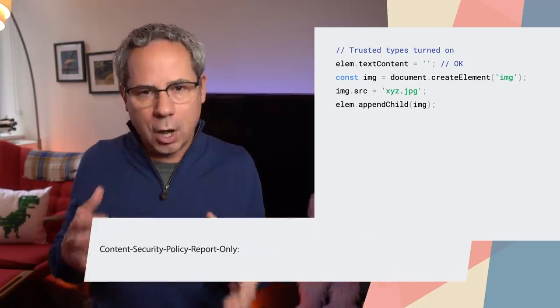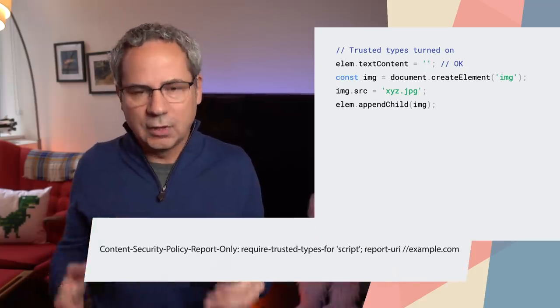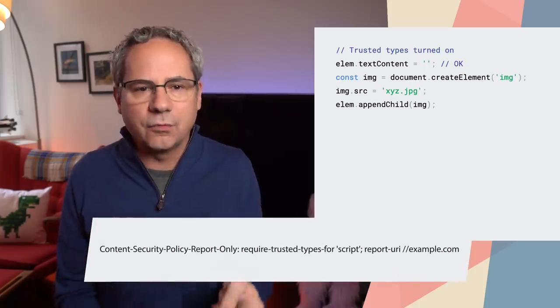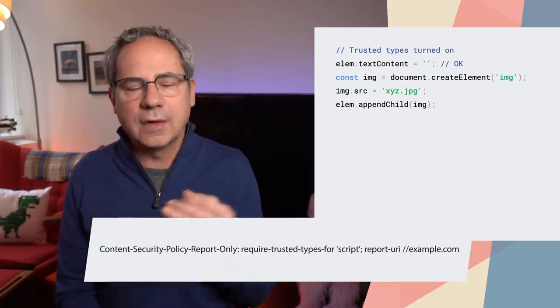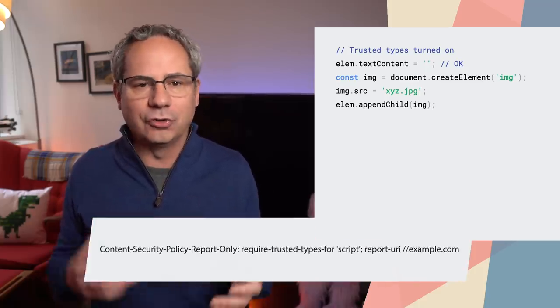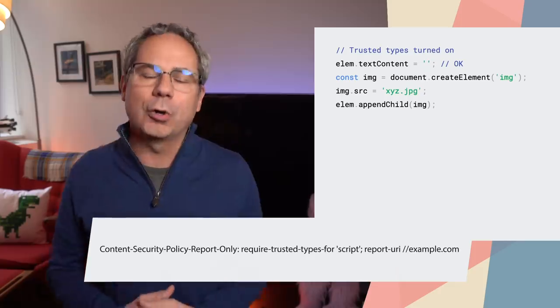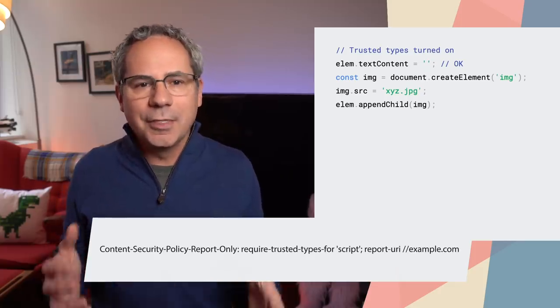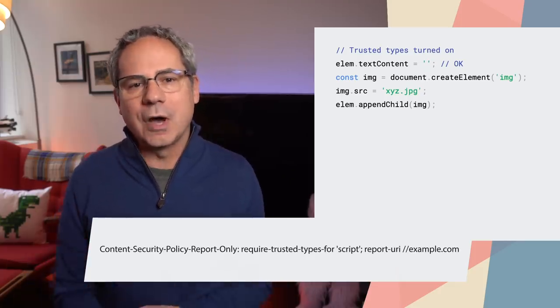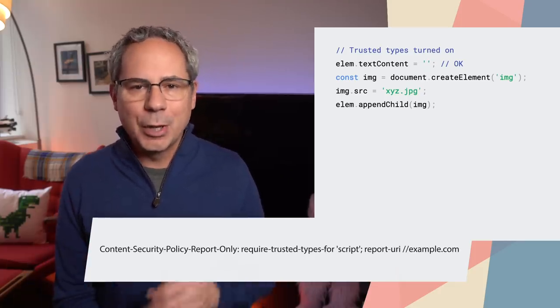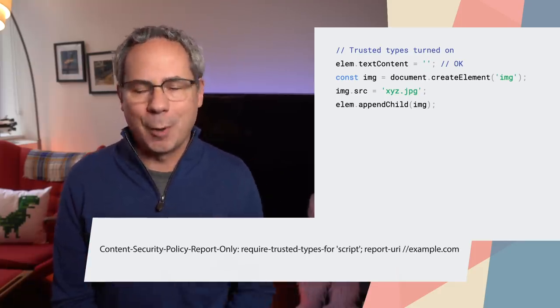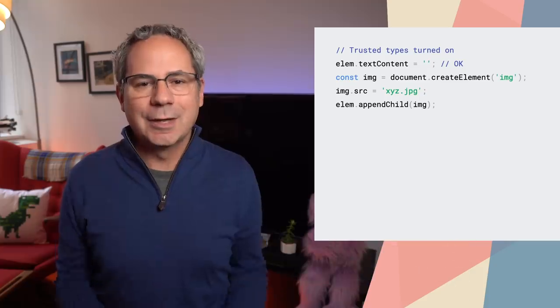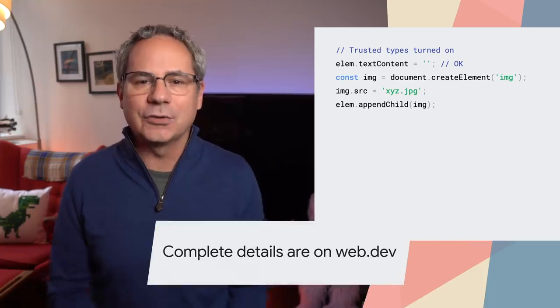Before you turn on trusted types, you'll want to identify and fix any violations using a report-only CSP header. Then, once you've got everything buttoned up, you can turn it on properly. Complete details are on web.dev.